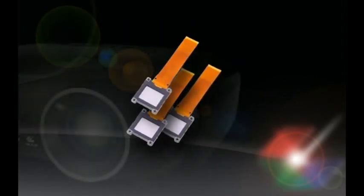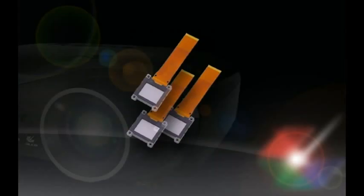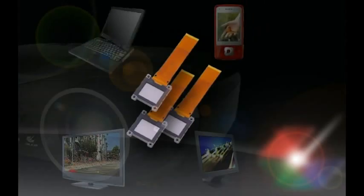3LCD is built around three discrete LCD chips. These tiny liquid crystal displays are similar to the LCDs found in televisions, monitors, notebook computers, even telephones.